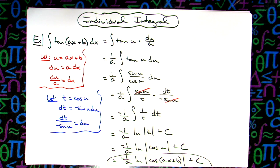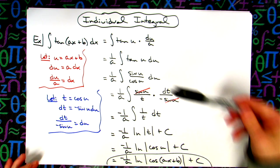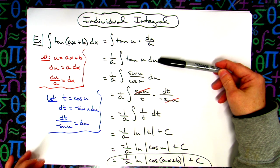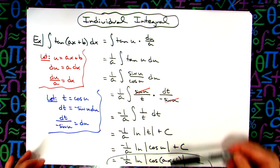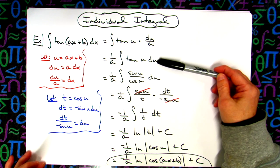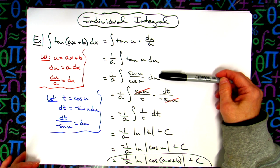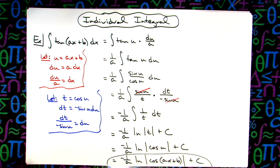This is a straightforward u substitution. If at this point you have this memorized, you can just go straight from the beginning to the end. If you do not have it memorized, you can work out the integral of tangent by hand and it just involves a second substitution.